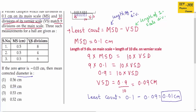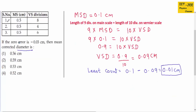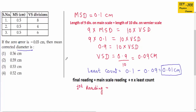Next, we use the main scale reading and vernier scale reading to find the final reading for all three measurements. The formula is: final reading equals main scale reading plus (coinciding vernier scale divisions times least count). For the first reading, the main scale reading is 0.5 cm and the vernier scale division is 8, so: 0.5 plus 8 times 0.01 cm equals 0.58 cm.